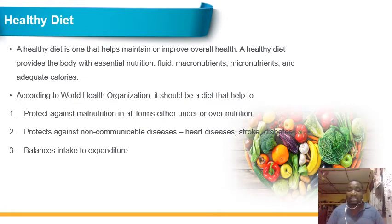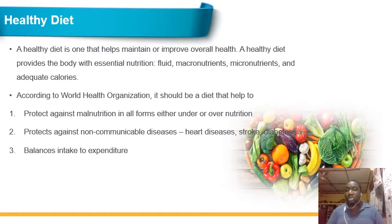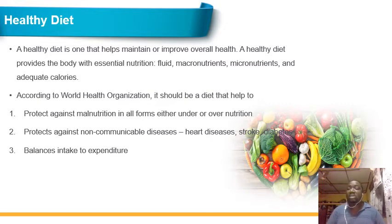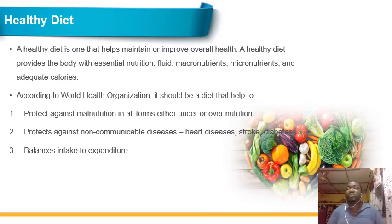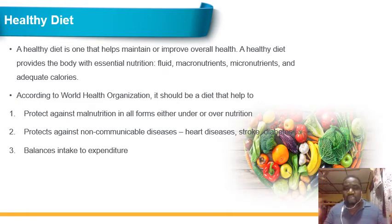Heart disease examples include hypertensive heart disease, resulting from hypertension, and coronary heart disease, resulting from a lot of fat along the vessels that supply the heart muscles. Then we have stroke, which is an affectation to some part of your brain, maybe due to occlusion of vessels that supply those parts of the brain, or due to some environmental or dietary factors. We also have diabetes, which involves high blood sugar.